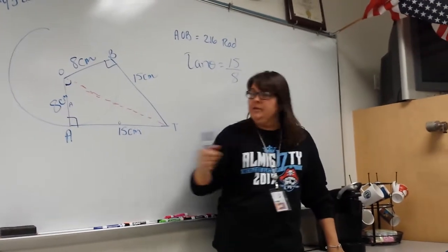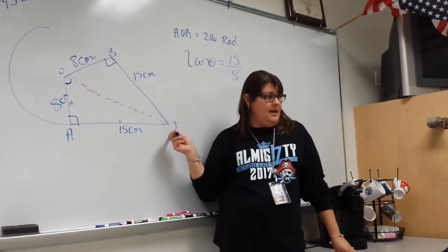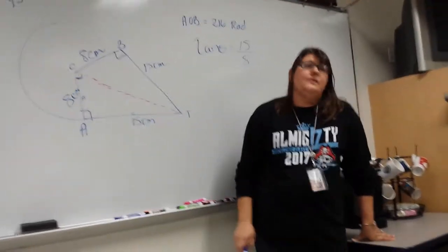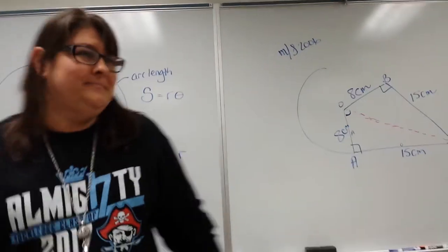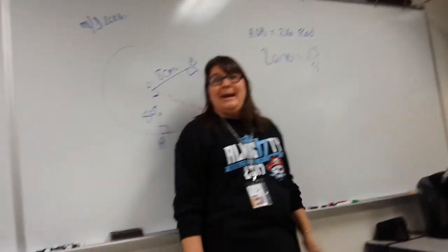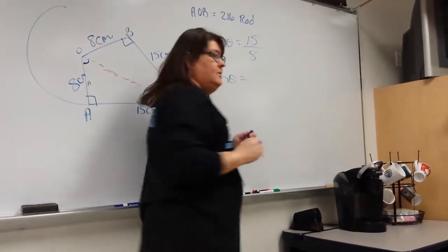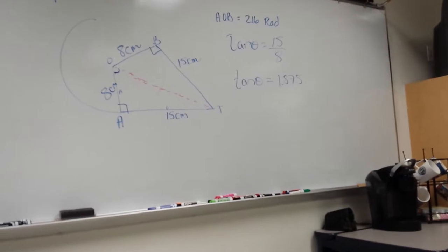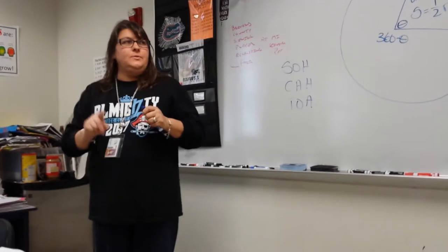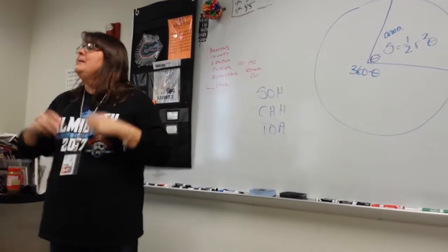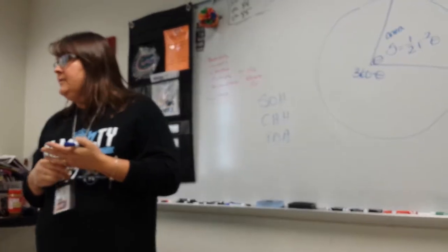By definition in geometry, when a radius hits a tangent line it creates a right angle. Now let's solve this — everybody get your calculators out. First step: find 15 divided by 8. You get 1.875. So tangent of theta is equivalent to 1.875. Now, are we doing this problem in radians or degrees? Radians. So your calculator should be in radians mode — press DRG and go to RAD.